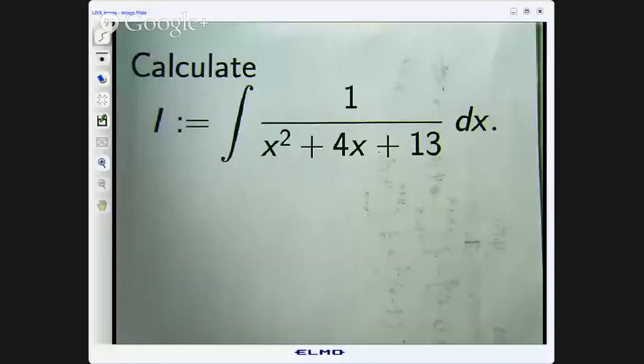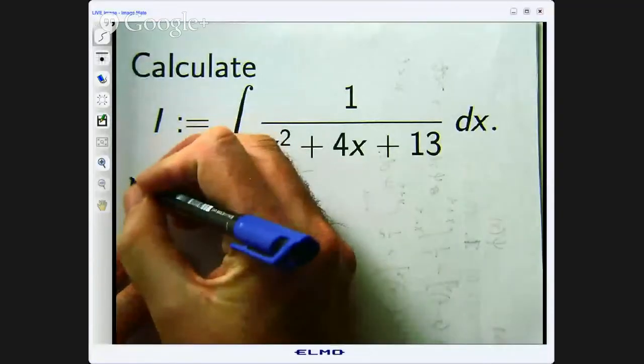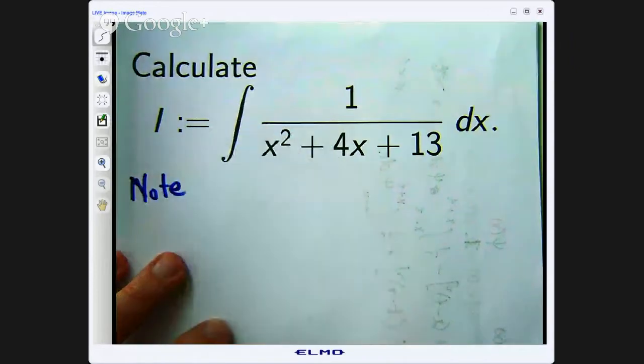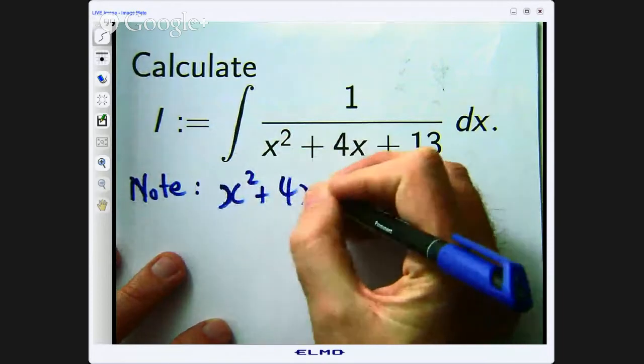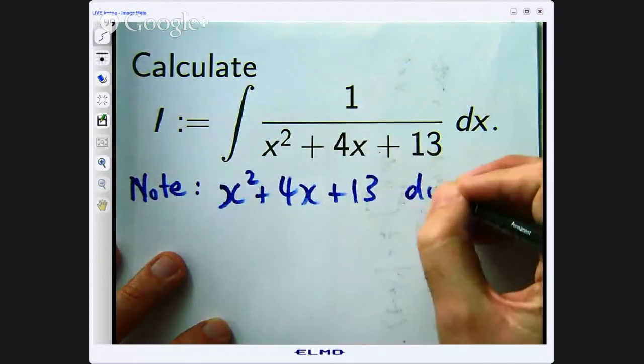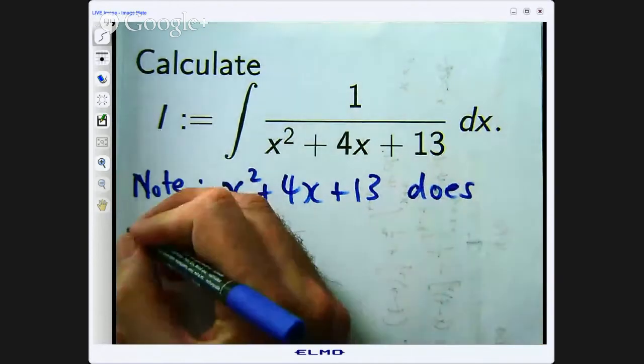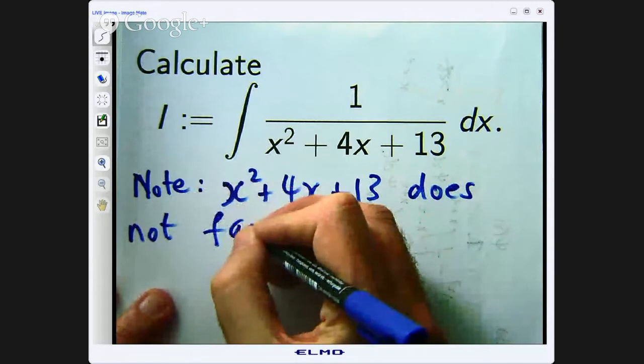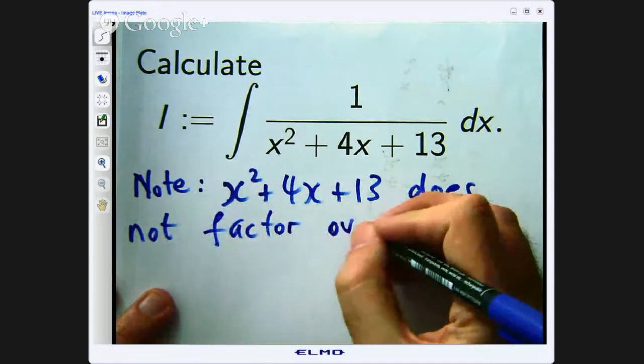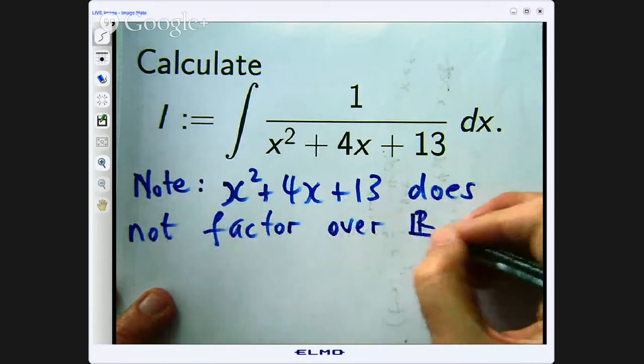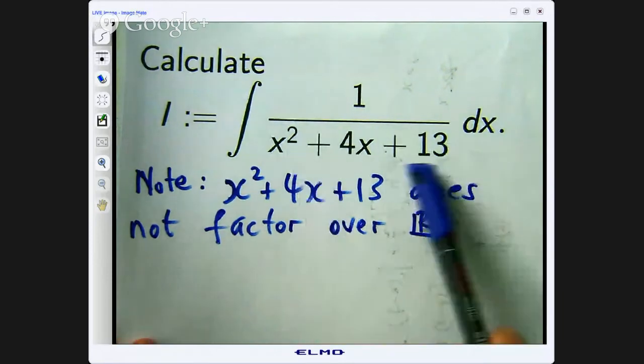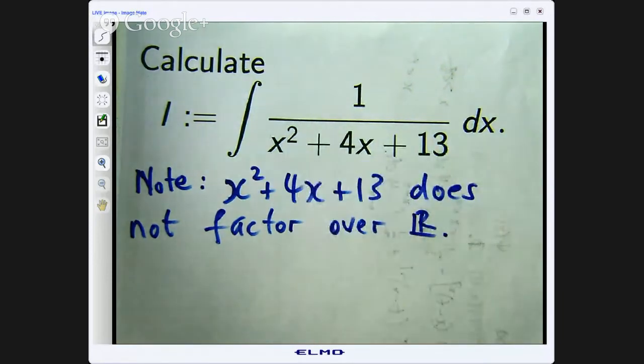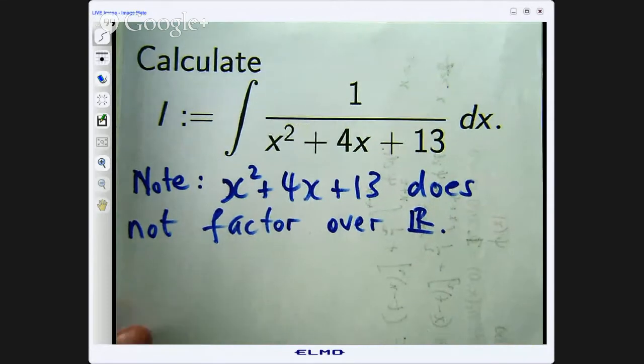Alright so first of all we note x² plus 4x plus 13 does not factor over the real numbers. By this thing I mean the set of real numbers. Okay so how do we do it? Well let us complete the square and then we will put it in a form where we can use an inverse tan. Okay so let me show you what I mean.